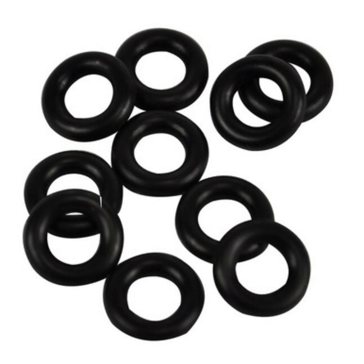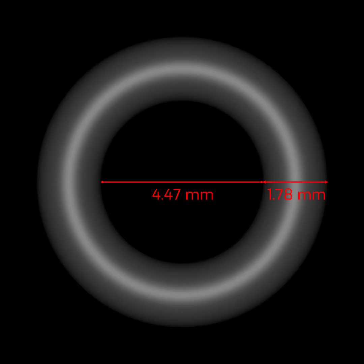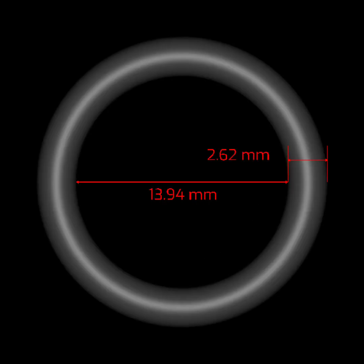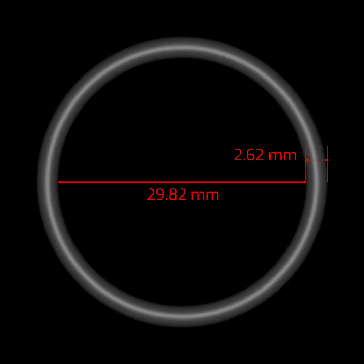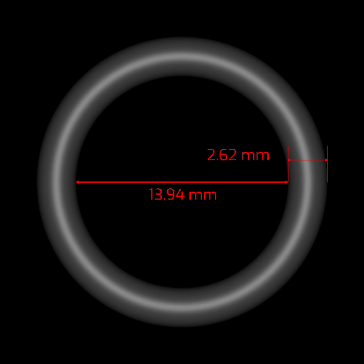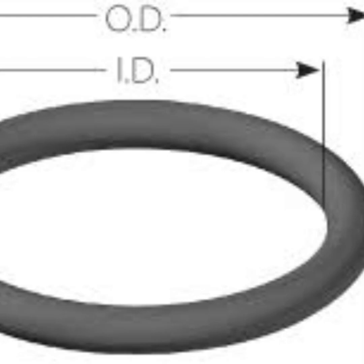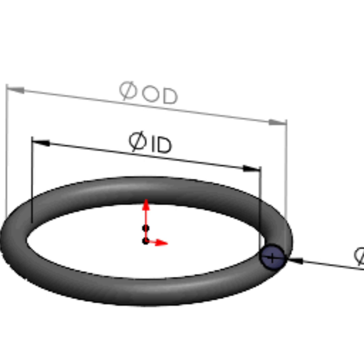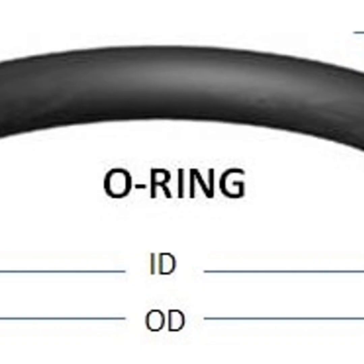In manufacturing equipment, O-rings are used in machinery and equipment for sealing joints, bearings, valves, and pistons.